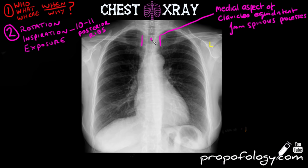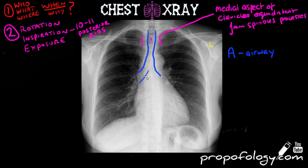Then you're going to adopt an A, B, C, D, E approach to interpreting chest x-rays. A obviously stands for airways, so we're talking about the trachea and its branches, the bronchi, and any airways you can see distal to that. You're going to trace it, look down either side, and look in both lung fields as well.